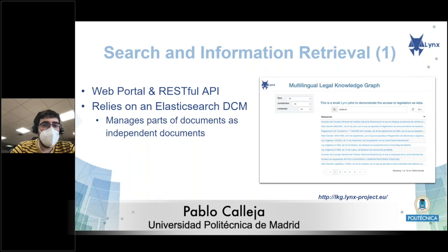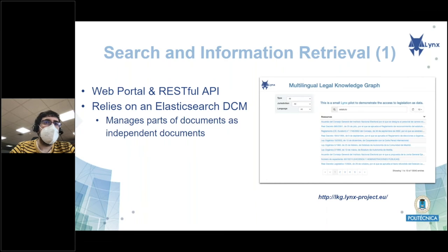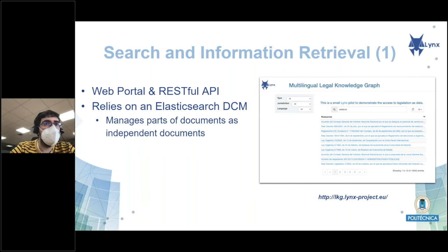In the context of this project, we have also created a document search service for information retrieval tasks. It is presented as a user-friendly web portal in which you can ask for different words or terms, and you can also filter with different types of parameters such as the type of documents, the jurisdiction, or the language. But internally, it works also as a RESTful API and can be consumed by other applications.